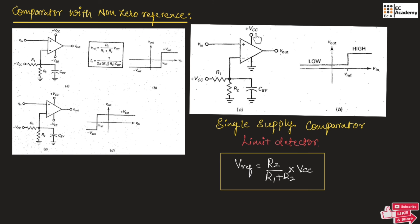We can design the same circuit for negative reference voltage by taking minus VEE and connecting VCC to ground. Here we take minus VEE so that we can get a negative reference voltage. For the negative reference voltage, when the input is less than the negative reference voltage, the output will be low, and the output will be high for input greater than the negative reference voltage. In all these circuits, we can design the reference voltage by taking different values for resistance R1 and R2, as seen from this formula.